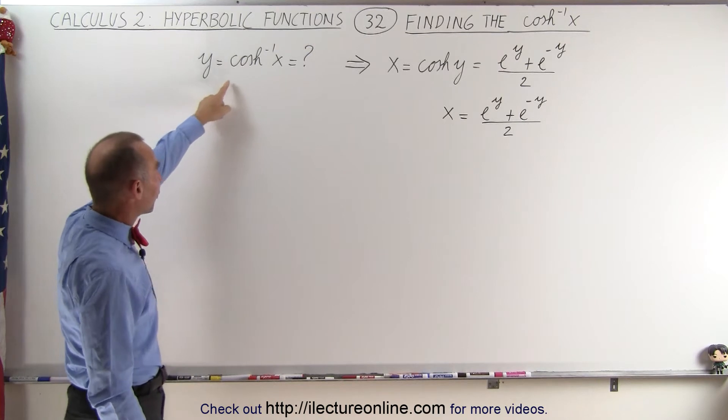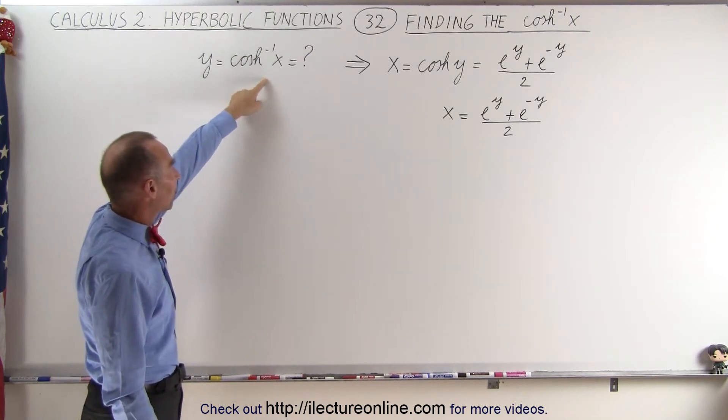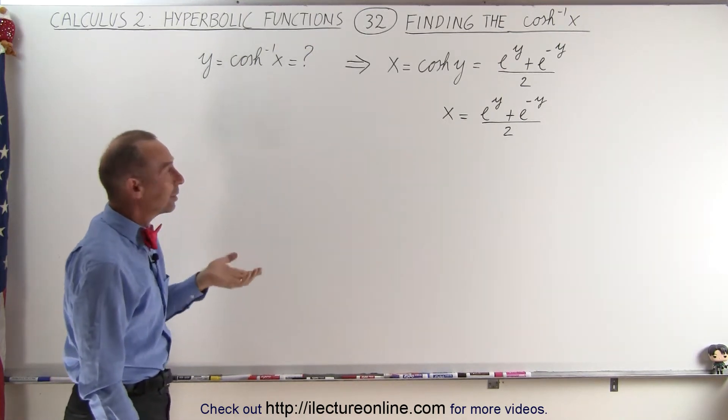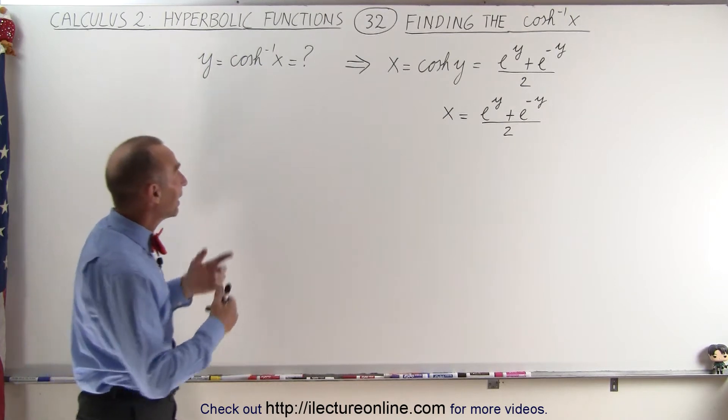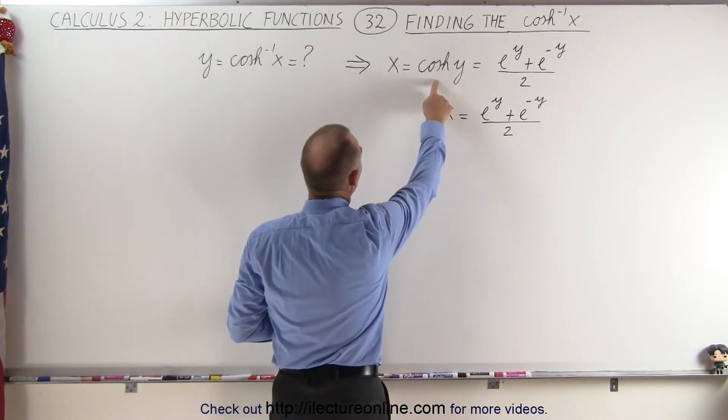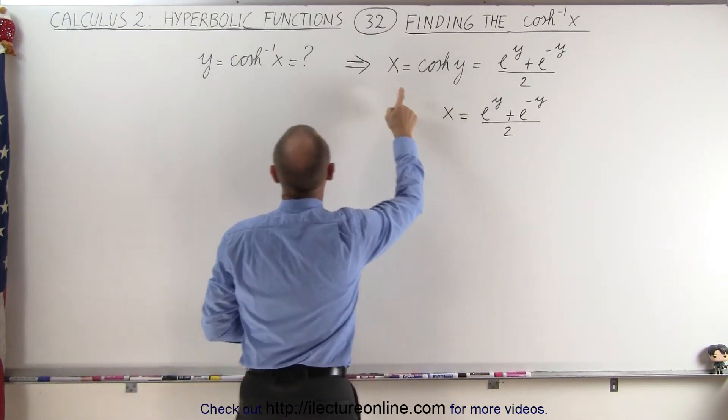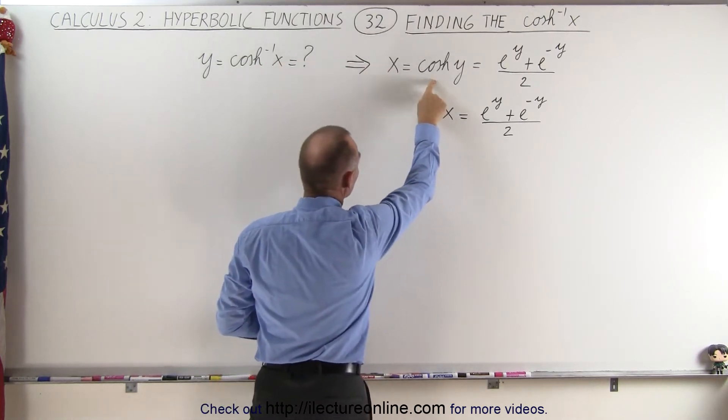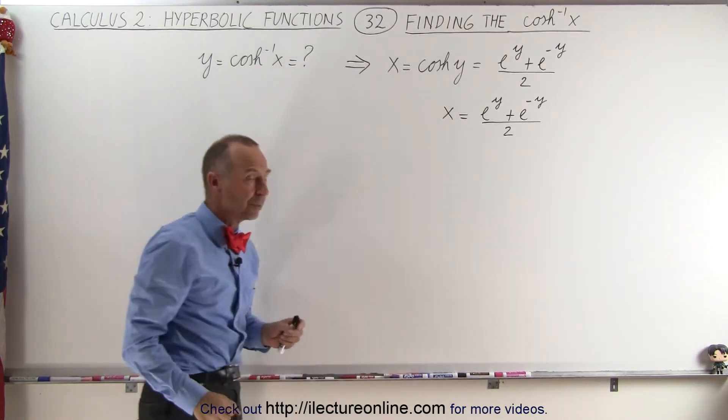If we let y equal the function, the inverse hyperbolic cosine of x, and we're trying to determine what that's equal to, we can then say that x must then be equal to the hyperbolic cosine of y. So we go from the inverse function to the regular function by simply reversing the variables.